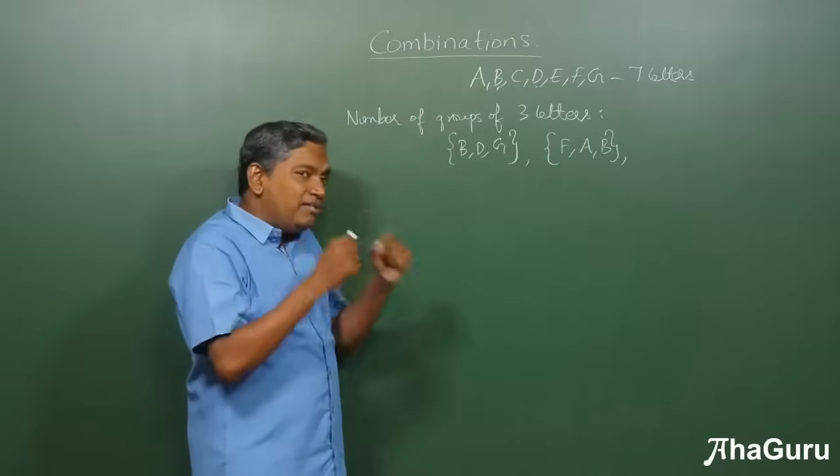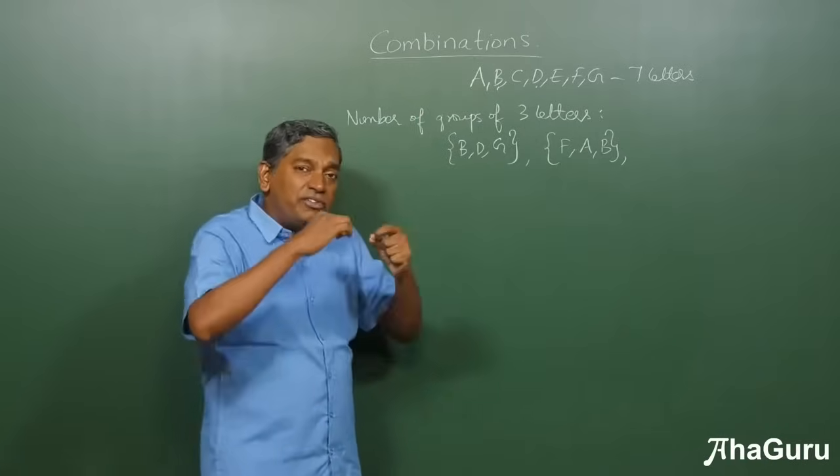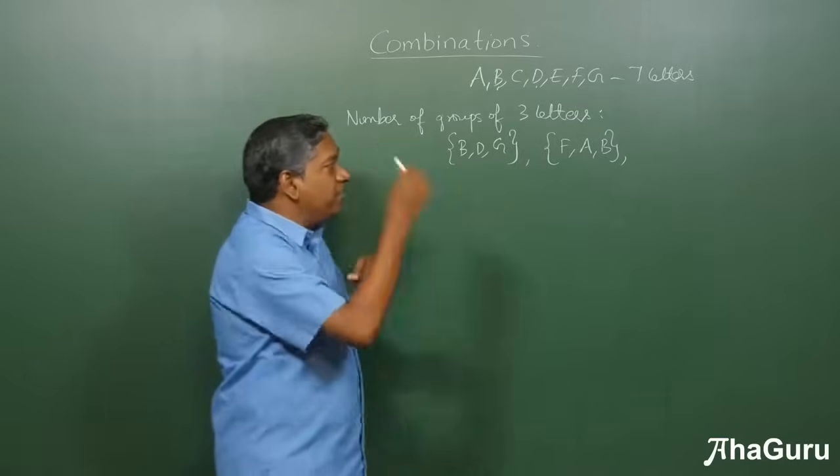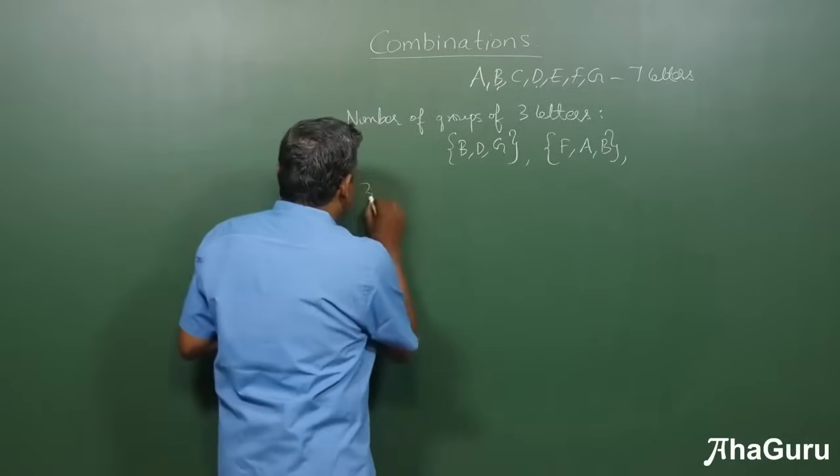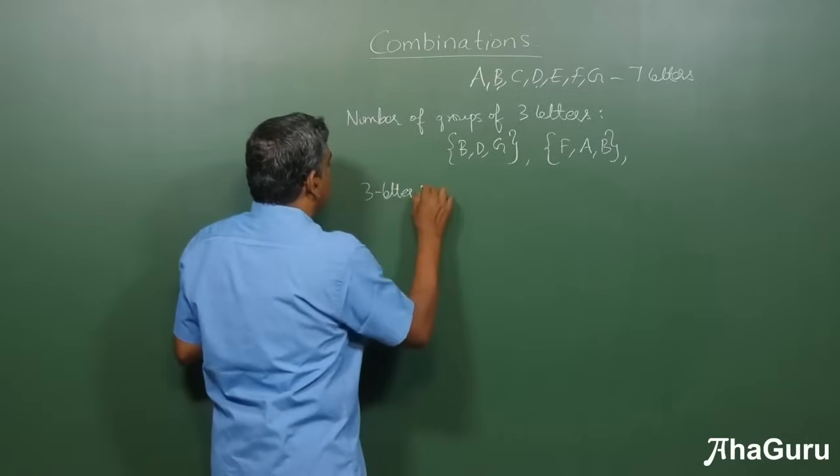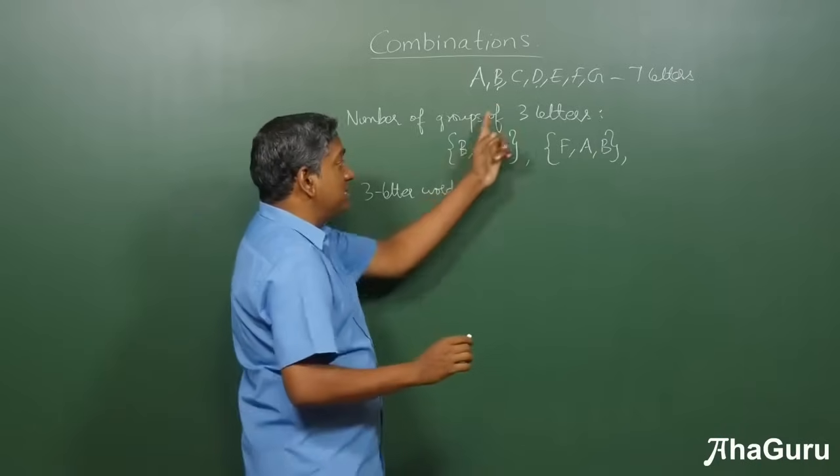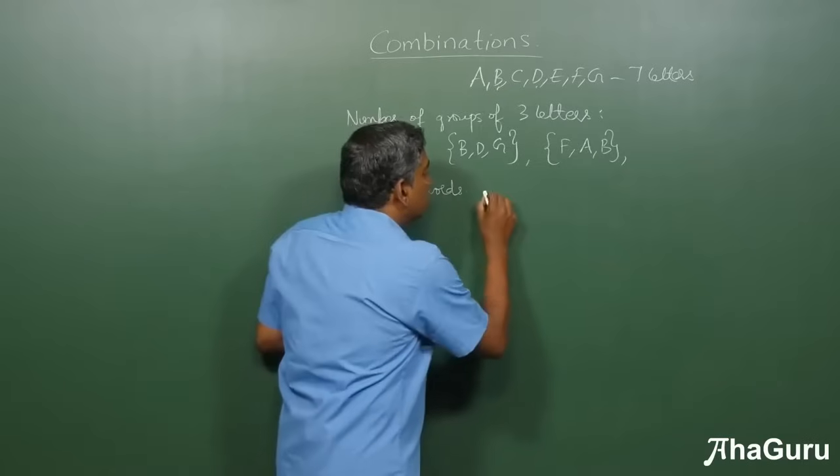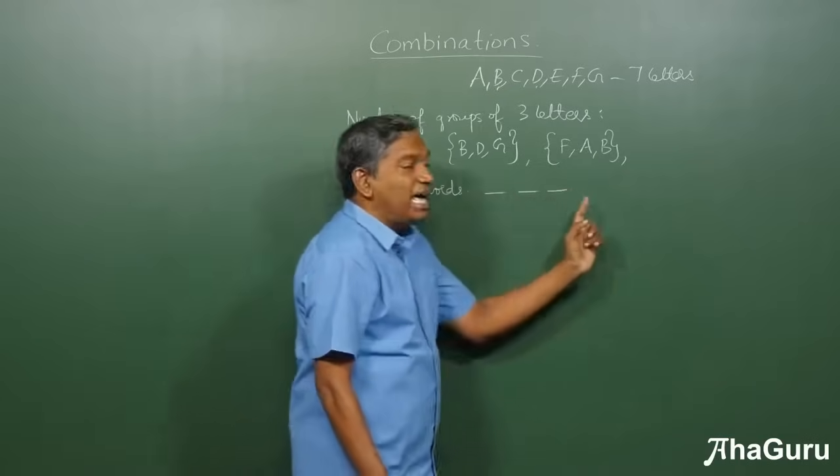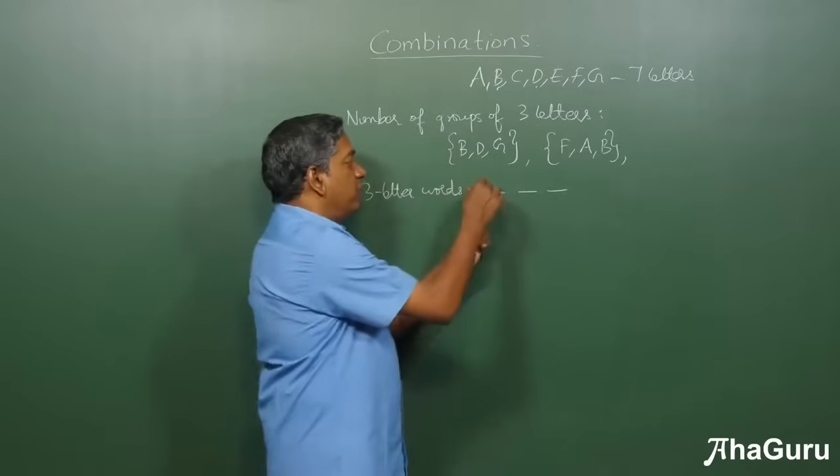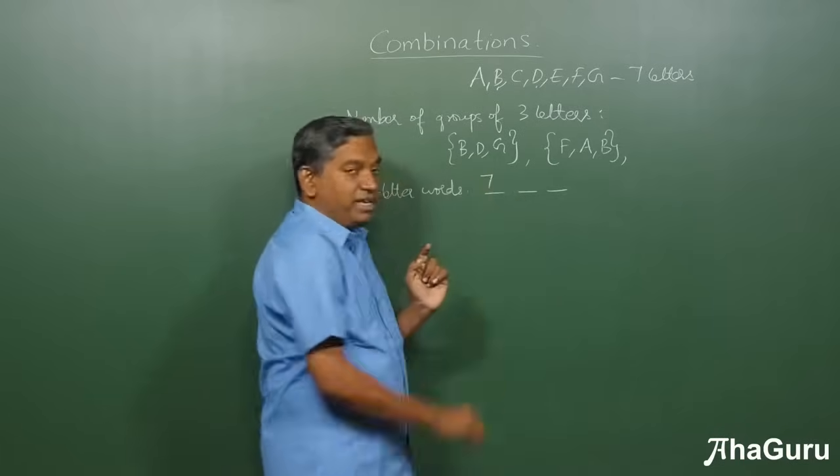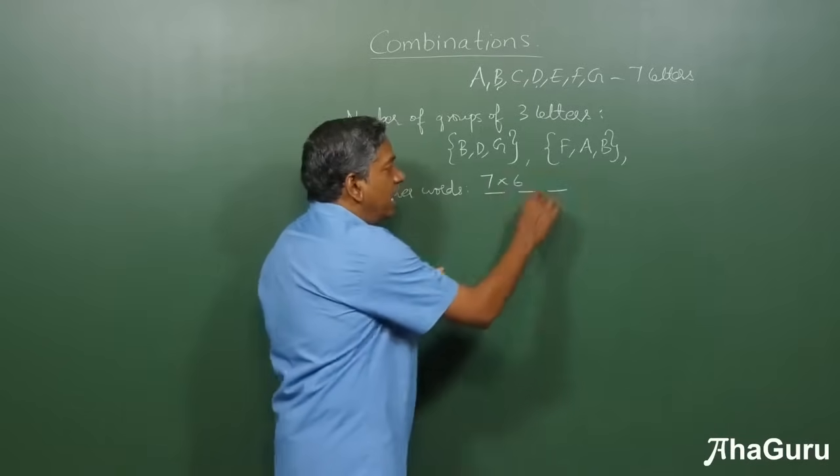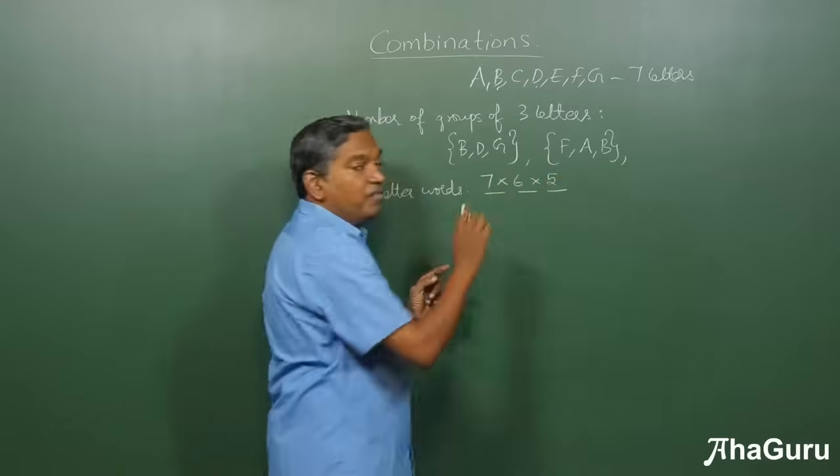Let's see, can we use something that we have already learned to solve this problem? For example, if I said I want 3 letter words, that's not the same as groups of 3 letters. I'll explain what the difference is. So what we would have done is, we would have put 3 blanks and said, the first blank can be filled in 7 ways, because there are 7 letters. The second blank can be filled in 6 ways, and the third blank can be filled in 5 ways.